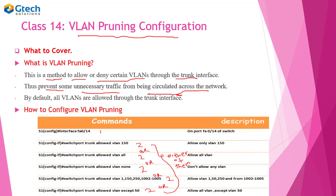By default, all VLANs are allowed through the trunk interface. By default simply means there is no configuration that has been done to specify a certain rule. So let's see how we can configure VLAN pruning. The first thing we must do on a switch is to configure the VLANs.